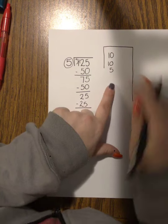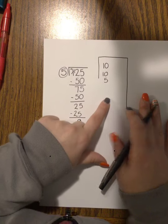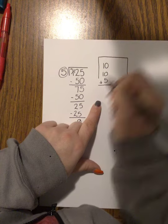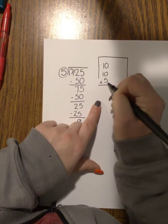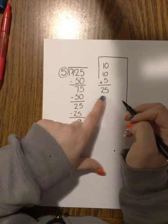Now I come over here to my bank to find my quotient, or my answer to my division problem. I'm just going to add up what's in my bank: 10 plus 10 is 20, plus 5 is 25. So that means in 125 there are 25 groups of 5.